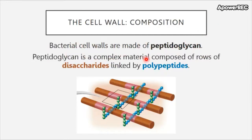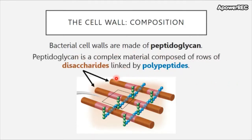Peptidoglycan is a complex material composed of rows of disaccharides — shown as brownish-reddish strips — that are linked by polypeptides.